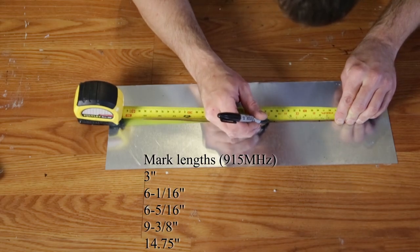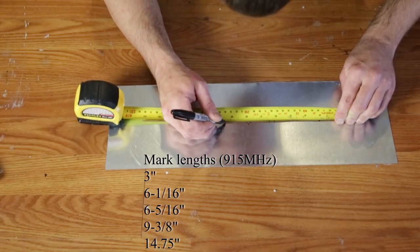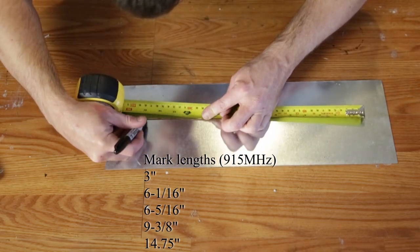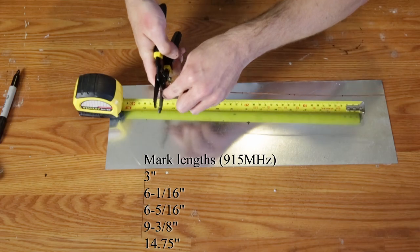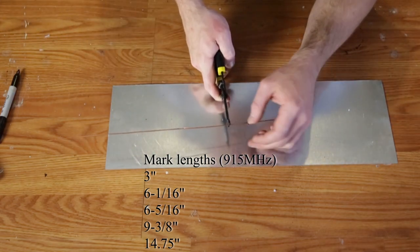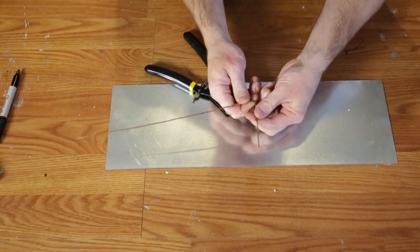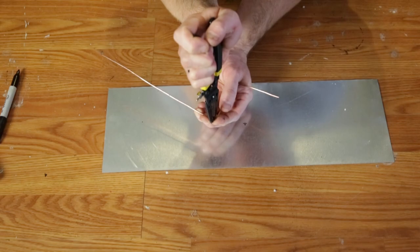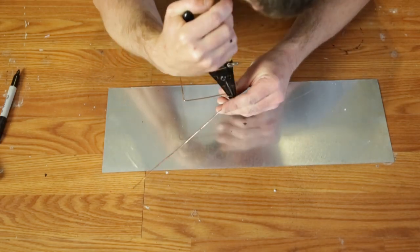Take a tape measure and marker to your element and make the following marks: 3 inches, 6 and 1/16 inches, 6 and 5/16 inches, 9 and 3/8 inches, and 14 and 3/4 inches. Chop the end off at 14 and 3/4, then make a bend at each mark so it looks like a straight wire with a large U in it. You don't have to be exactly perfect on the bend, but reasonably close.